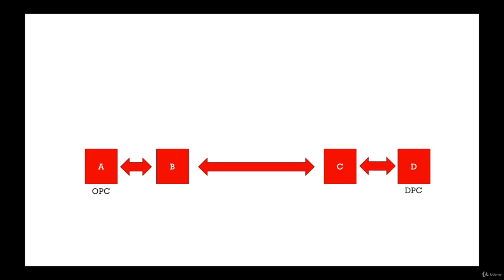In A's routing table, for the destination point code of D, the best option is to send it to B. The MTP3 layer of B receives the message and determines that the destination point code doesn't belong to it, so it acts like a router and sends the message to the next optimum hop. In B's routing table, against the destination point code of D, the next hop is C. Since B is not directly connected to D, the message is sent to C. C then checks its routing table — since C and D are directly connected, C sends the message directly to D. In this way, the message is transferred from A to D via B and C. At the D signaling point, the MTP3 layer extracts the message and sends it to the higher layers.